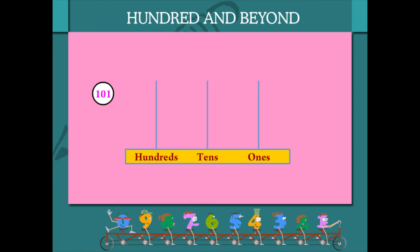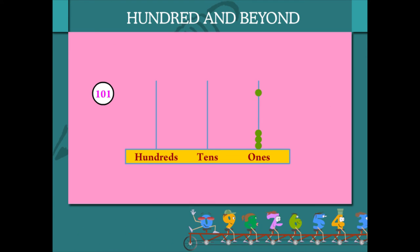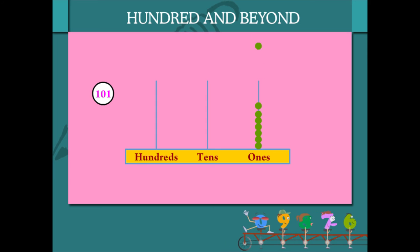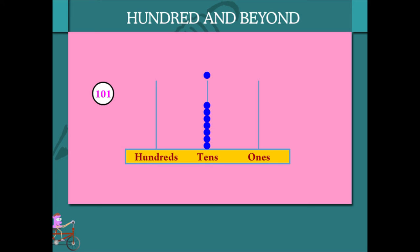That makes it clear. Now let's see 101 on the abacus. 10 beads of ones is 1 bead of tens. 10 beads of tens is 1 bead of hundreds.